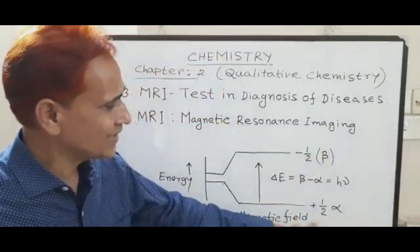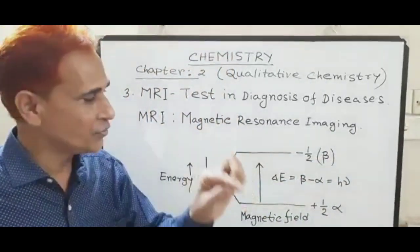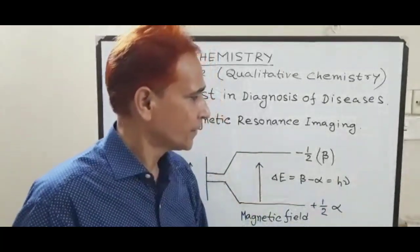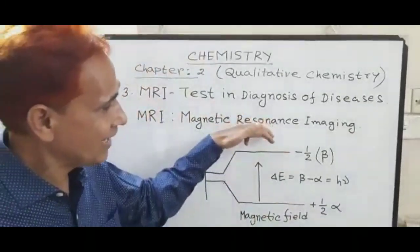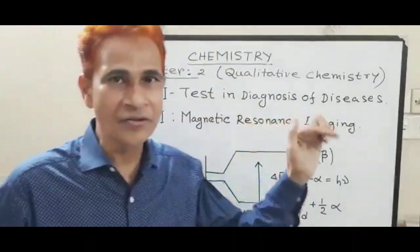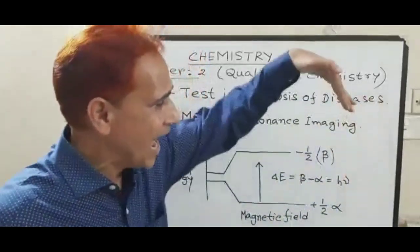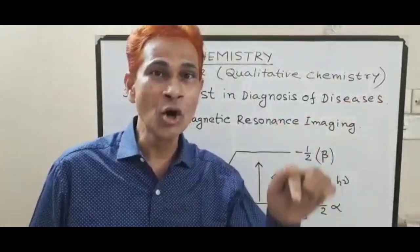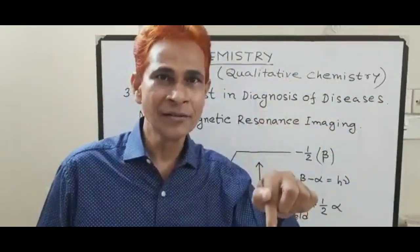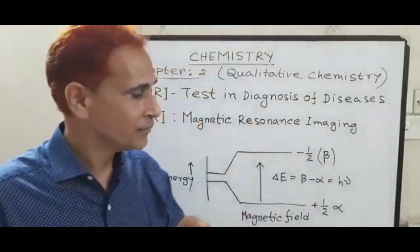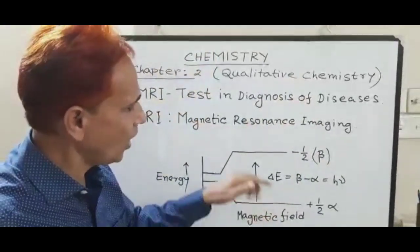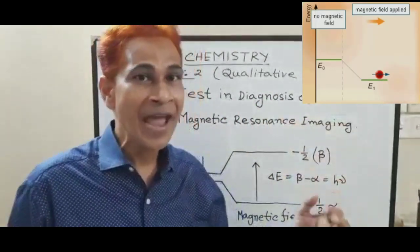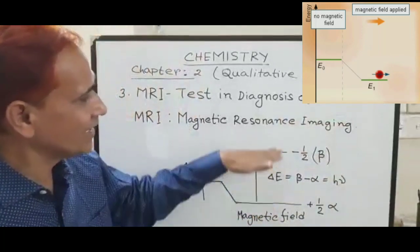In the lower energy level, the nuclei of hydrogen atoms reside in parallel spin. In the higher energy level, the nuclei of hydrogen atoms reside in anti-parallel spin. When a radio wave is applied to the body, the nuclei of hydrogen atoms at the lower energy level absorb the radio energy and transfer from lower energy level to higher energy level.